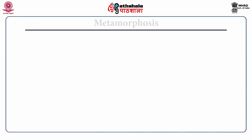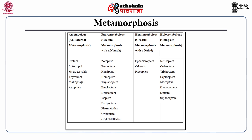Metamorphosis in insects can be categorized into four types. Ametabolous insects show no external metamorphosis; the orders include Protura, Entotrophi, Microcoryphia, Thysanura, Mallophaga and Anoplura. The second form, paurometabolous, is known as gradual metamorphosis with a larval nymph form; the orders include Zoroptera, Psocoptera, Hemiptera, Homoptera, Thysanoptera, Embioptera, Isoptera, Dictyoptera, and Orthoptera.